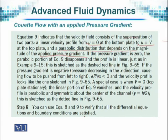If the pressure gradient is 0, then this will reduce to our initial problem where one plate was fixed, the upper plate was moving, but no external pressure was there, and we will have the same result.